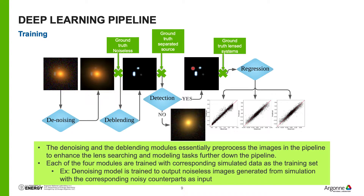We are not training this end-to-end in a completely data-driven way. The reason is that we have a lot of knowledge — in particular, simulations about the telescope, ground truth simulations about the lens system. The reason for building a modular deep learning pipeline is that we can leverage simulation data such as ground truth without noise, ground truth with separated source, and ground truth of the lens system. This allows us to verify the accuracy of each module and leverage data from simulations developed by domain experts over years.